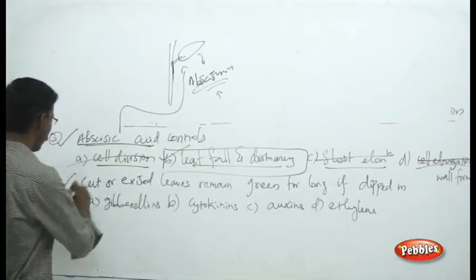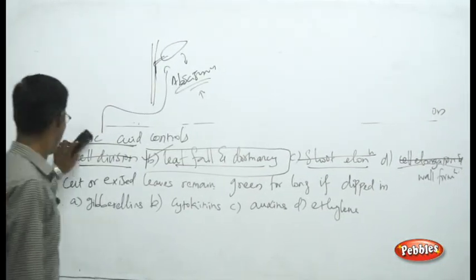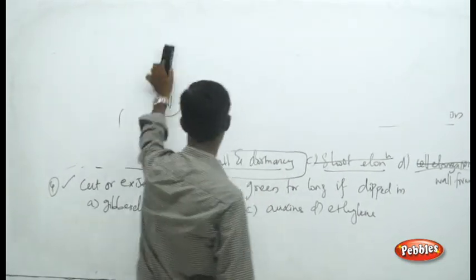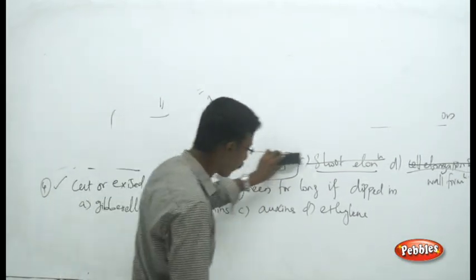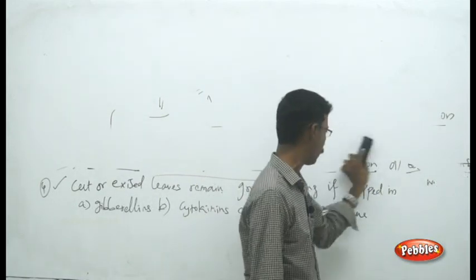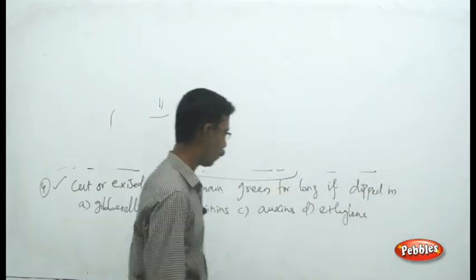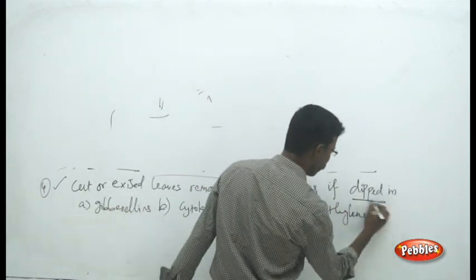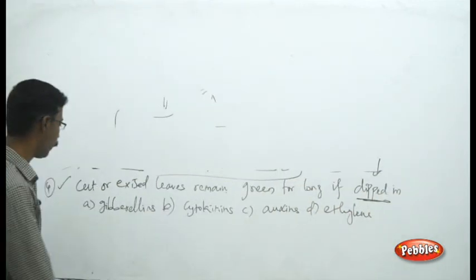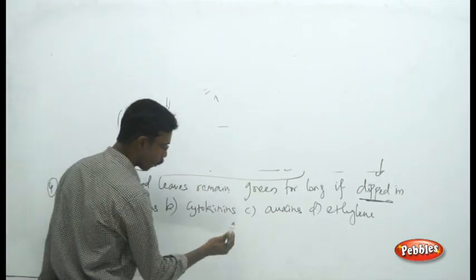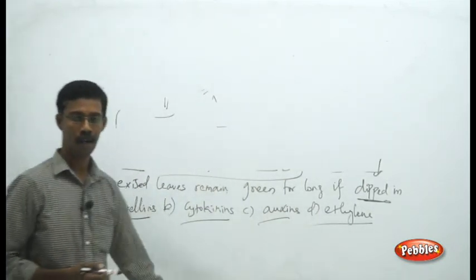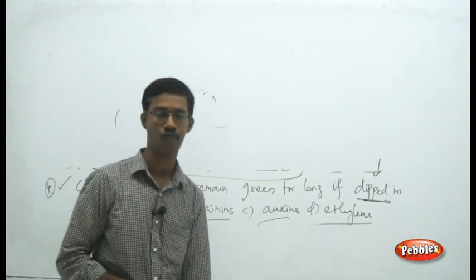The next question: the cut or excised leaves remain green for a long duration if you dip them in — the choices are gibberellins, cytokinins, auxins, and ethylene, all belonging to plant growth hormones. You have to choose the correct answer.